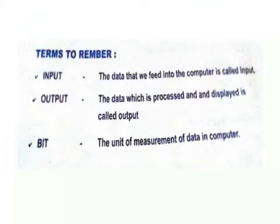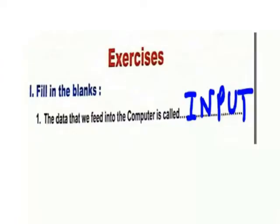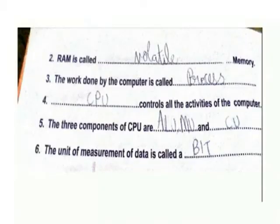Time to remember. Input: the data that is entered into the computer is called input. Bit: the unit of measurement of data in a computer. The full form of bit is binary digit. The data that is filled into the computer is called input. RAM is called volatile memory. The work done by the computer is called process. CPU controls all the activities of the computer. The three components of CPU are ALU, MU, and CU.